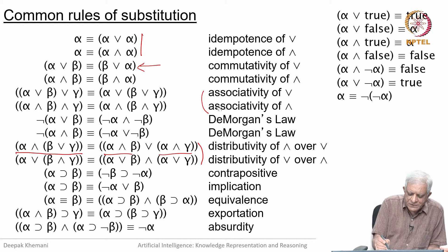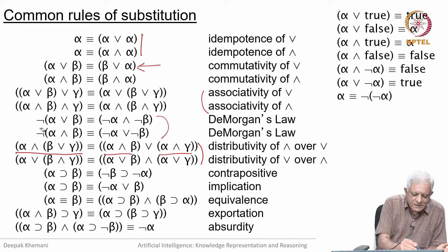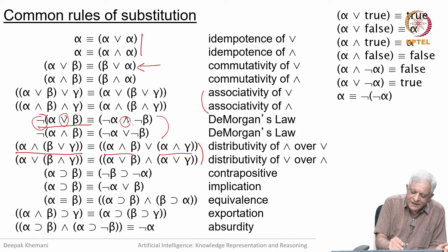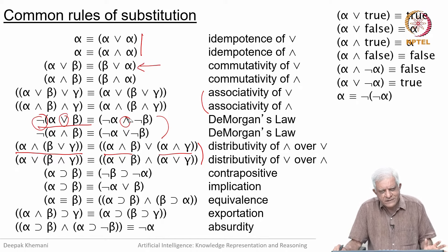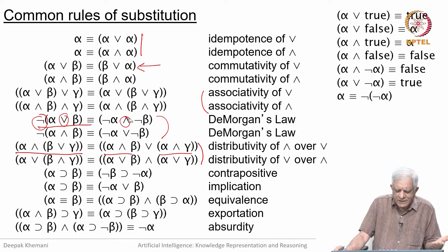Some very popular rules are the de Morgan laws, which say that if you have a compound formula preceded by a negation, you can push the negation inside — but when you do that, the connective will flip. If the original formula had 'or' and you push the negation inside, then the new connective will be 'and'. You can construct the truth table and verify that these are true. There are many rules of substitution that can be used for manipulating formulas to eventually derive something.